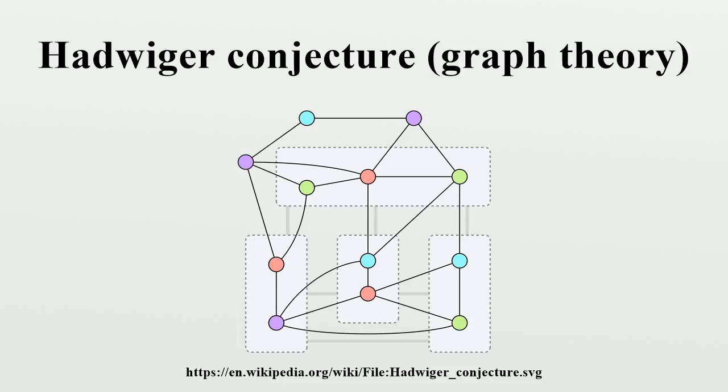Bollobas, Catlin and Erdos call it one of the deepest unsolved problems in graph theory. An equivalent form of the Hadwiger conjecture is that if there is no sequence of edge contractions that brings a graph G to the complete graph K_K, then G must have a vertex coloring with K-1 colors.